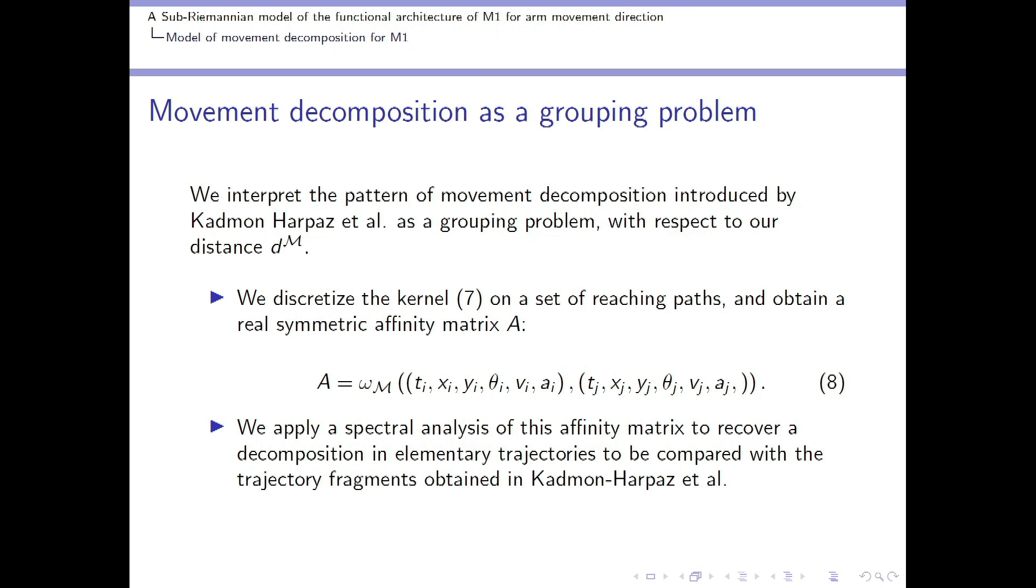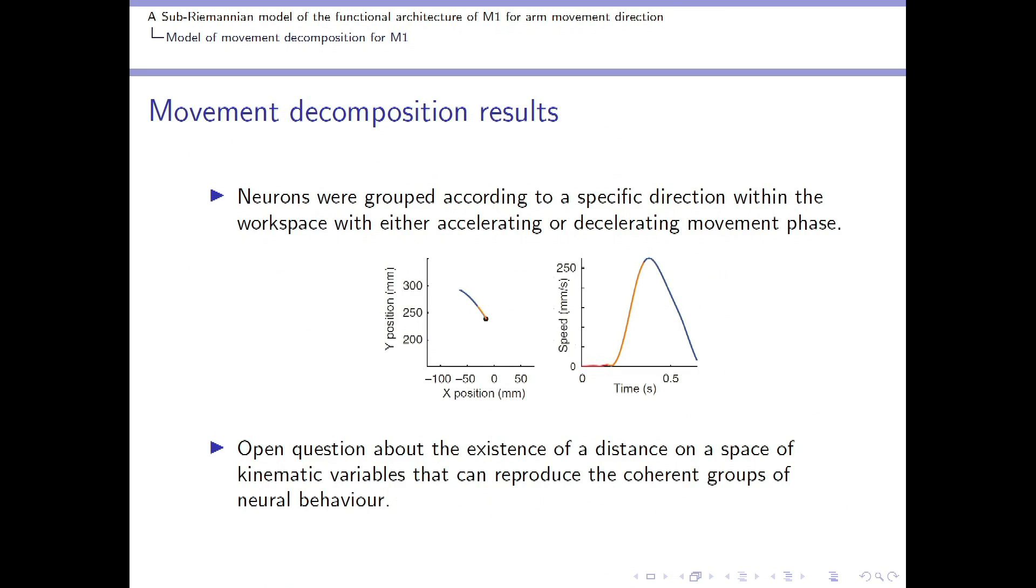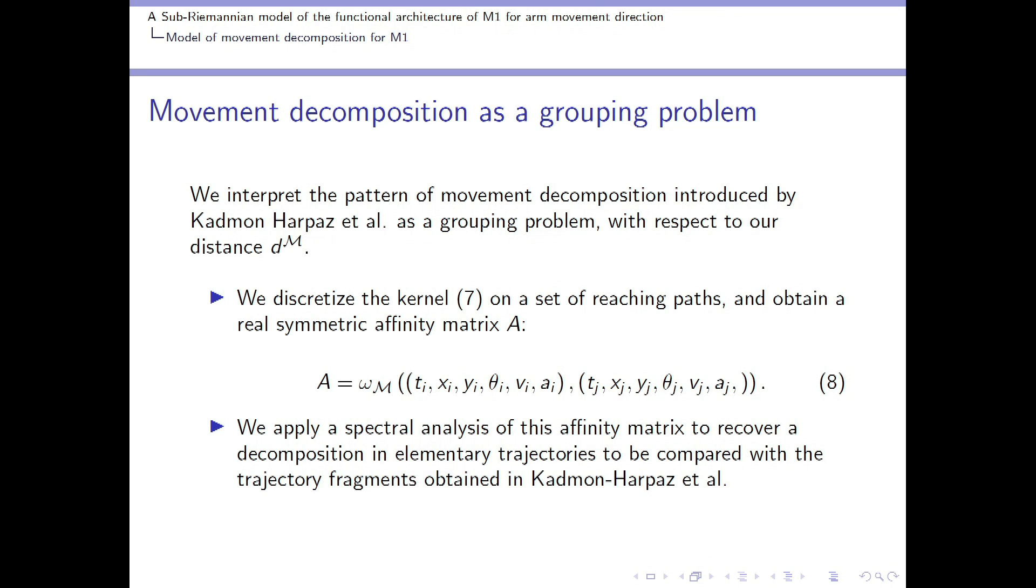Another key aspect for solving the movement decomposition problem was to interpret the pattern of movement decomposition as a grouping problem. Therefore, we discretize our sub-Riemannian kernel on a set of reaching paths and obtain a real symmetric affinity matrix, for which we apply spectral classical analysis techniques of these affinity matrices to recover a decomposition into elementary trajectories to be compared to the neural one.